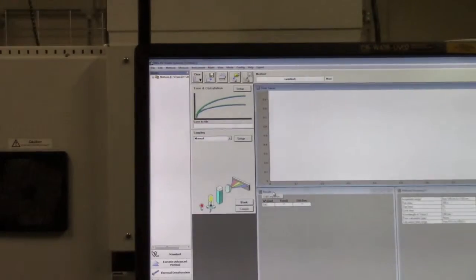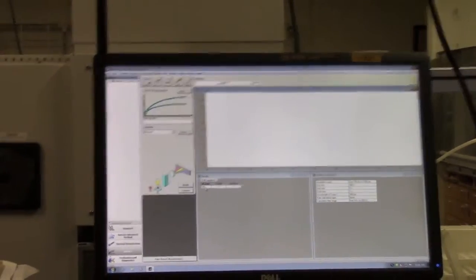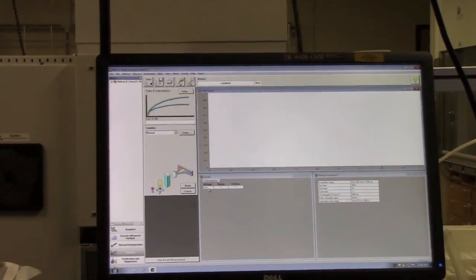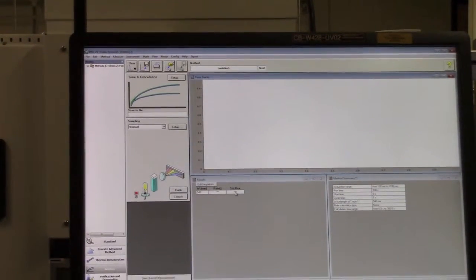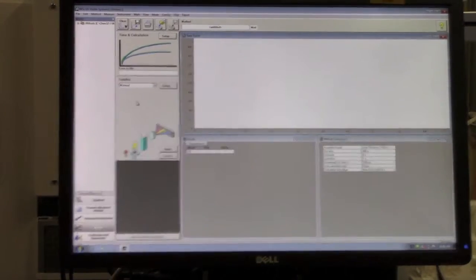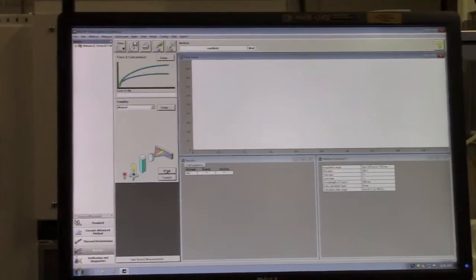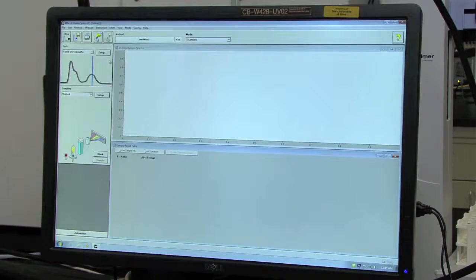Notice in the results section that the wavelength is set to 540 nanometers. There will also be a rate and standard deviation column. At this point, you're set to take the blank spectrum, which you can go ahead and do if you haven't already.